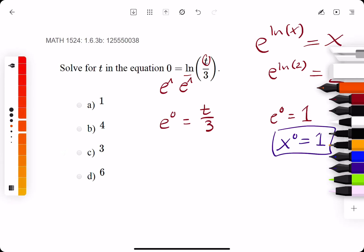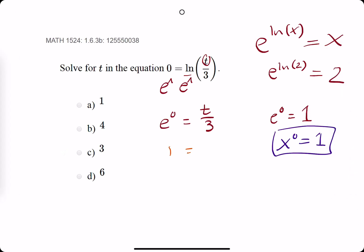So as we finish our problem here, we get 1 is equal to t over 3, multiply by 3 on both sides. And we get that t is equal to 3.